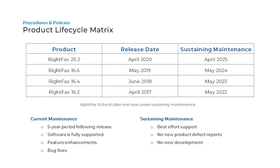On this slide you can see the RightFax product lifecycle matrix. The key takeaway here is the dates — each version of RightFax goes into sustaining maintenance. RightFax 20.2 will not go into sustaining maintenance until April 2025. RightFax 10.6 and older is currently in sustaining maintenance.